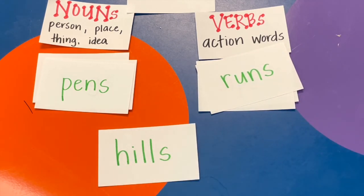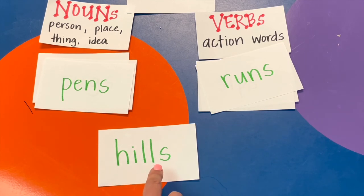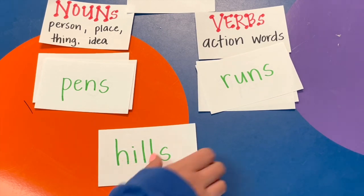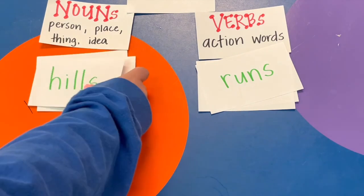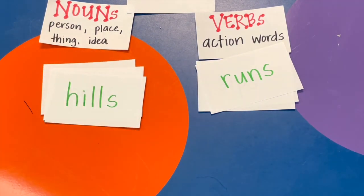And the last one: hill is the base word. Hills is the whole word. Noun or verb? Hills are a place, so hills is a noun. Great job, friends!